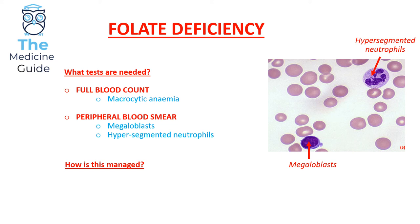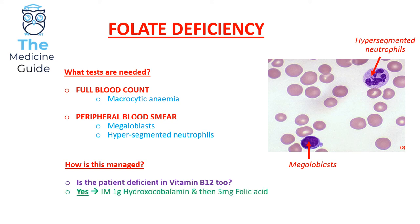Management for folate deficiency is more complicated and exceptionally high yield. In patients with a possible folate deficiency, we need to ask ourselves: is the patient also deficient in vitamin B12? If yes, we need to treat the vitamin B12 deficiency first, and then when B12 levels have returned to normal, we can begin to treat the folate deficiency. Otherwise, this can precipitate subacute combined degeneration of the spinal cord.